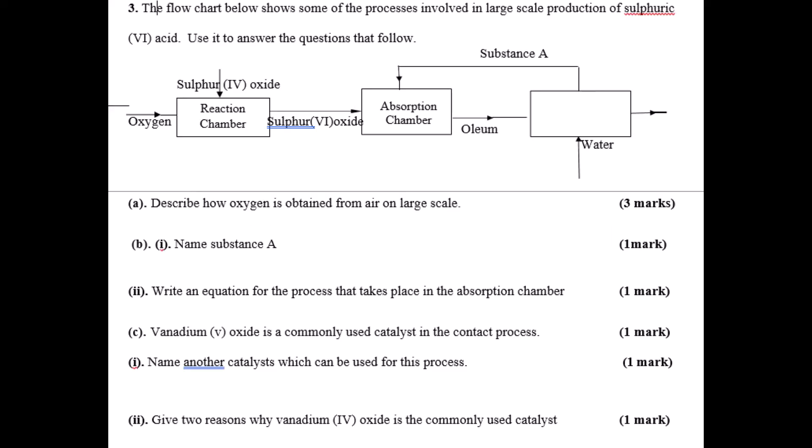Question number 3 is on sulfur and its compounds. It's a flowchart for the large-scale manufacture of sulfuric acid. Oxygen is mixed with sulfur dioxide in a reaction chamber to get sulfur trioxide, taken to an absorption chamber where you obtain oleum. Oleum is taken to another chamber where water is added and substance A comes out. Describe how oxygen can be obtained from air.